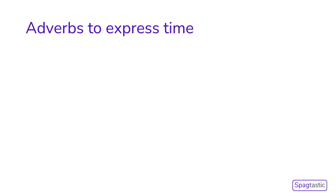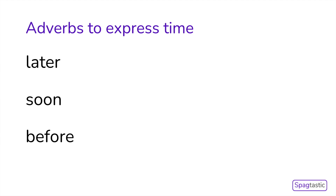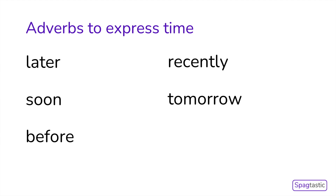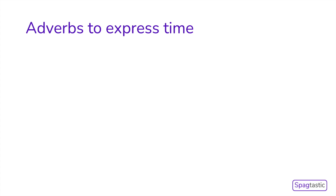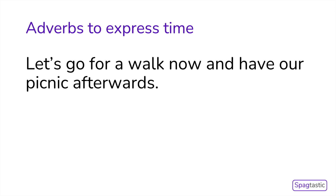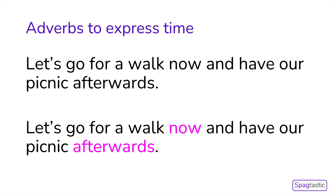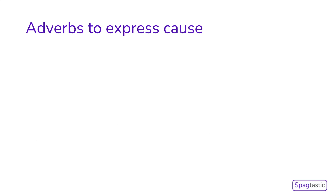We are first going to learn about adverbs to express time. These tell us when an action will take place, and they include words such as later, soon, before, recently, tomorrow and daily. Can you spot the adverbs for time in this sentence: 'Let's go for a walk now and have our picnic afterwards'? Why not pause the video and have a think for yourself? The adverbs are 'now' and 'afterwards'.